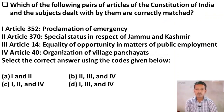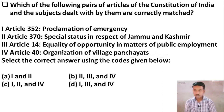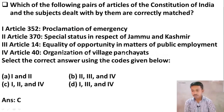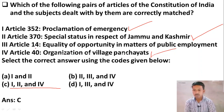Next question: Which of the following pairs of articles of the Constitution of India and the subjects dealt with by them are correctly matched? Article 352 — Proclamation of Emergency. Article 370 — Special Status in respect of Jammu and Kashmir. Article 14 — Equality of Opportunity in Matters of Public Employment. Article 40 — Organisation of Village Panchayats. The right answer is Option C — 1, 2 and 4. Article 352 (Proclamation of Emergency) is correct. Article 370 (Special Status for Jammu and Kashmir) is correct. Article 40 (Organisation of Village Panchayats) is correct. But Article 14 — Equality of Opportunity in Matters of Public Employment — is not correct for that subject.